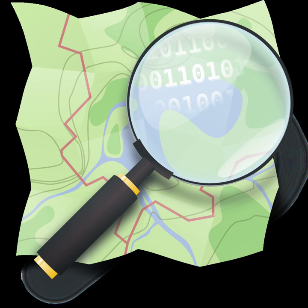In February 2015, OpenStreetMap added route planning functionality to the map on its official website. The routing uses external services, namely OSRM, Graphhopper and MapQuest. There are other routing providers and applications listed in the official routing wiki.